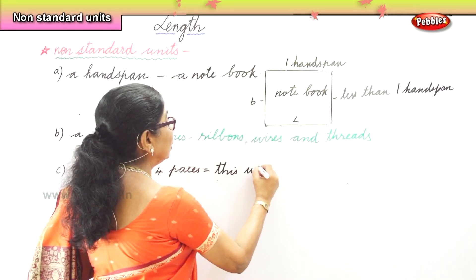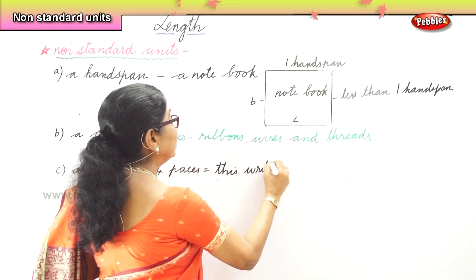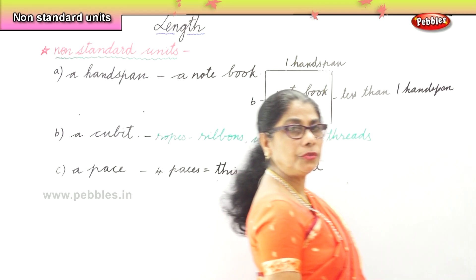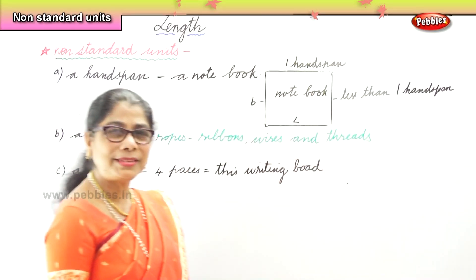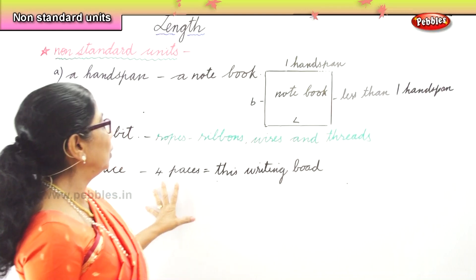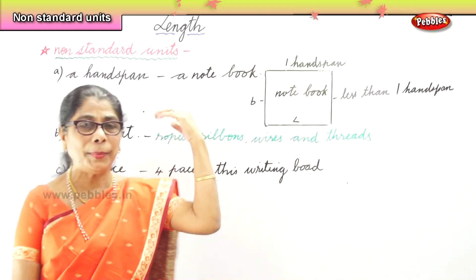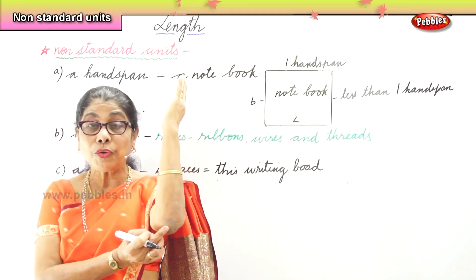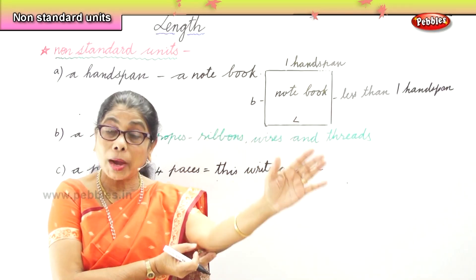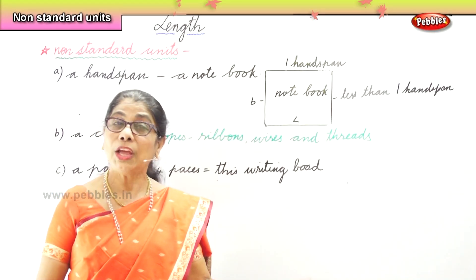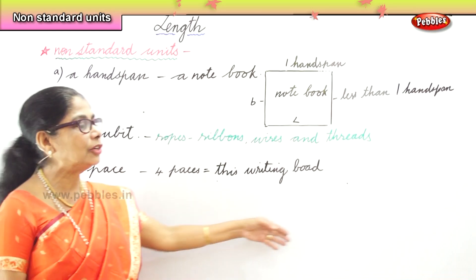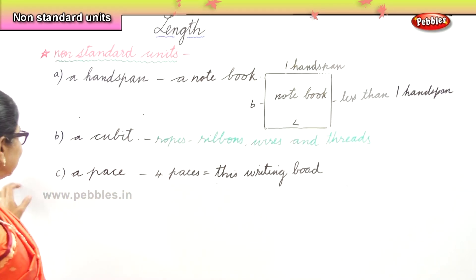This writing board is four paces. Let's recap. The first non-standard unit is a hand span — we measured a notebook. The next is a cubit, from the end of your elbow to the end of your tall finger — you measure ribbons, robes, wires, and threads. And if you have a stick, that's how you do it. The third non-standard unit is a pace — this writing board is four paces.